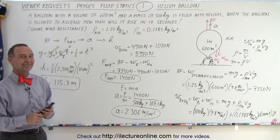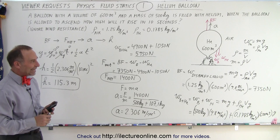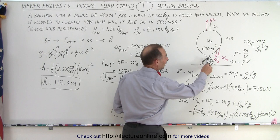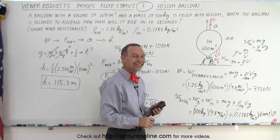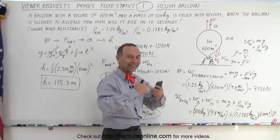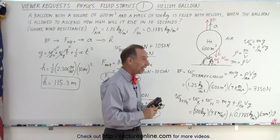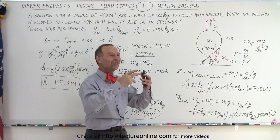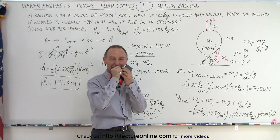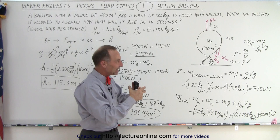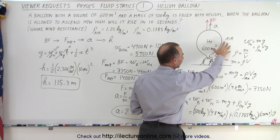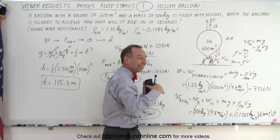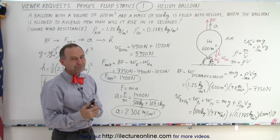A student asks: if the balloon is accelerating upward, does it lose helium? The answer is no — we make sure no helium comes out. Another student suggests it works like a rocket with exhaust. That's not the case here; those are much more difficult problems. In graduate physics, rockets lose mass as fuel burns, making it harder. This balloon works simply because helium has much less mass than air. It displaces a large volume of air, and the combined mass of helium plus balloon is less than the mass of the displaced air, so the balloon rises.